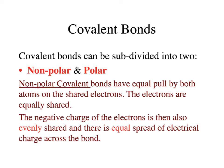Covalent bonds themselves can be subdivided into two categories: non-polar covalent bonds and polar covalent bonds. The distinction is based on where the shared electrons are located in space. Imagine two teams in a tug-of-war pulling a rope. If both teams are equally balanced in power, the rope and flag will be equally distributed between them — this is equivalent to a non-polar covalent bond, where the pull on the electrons is equal from both atoms.